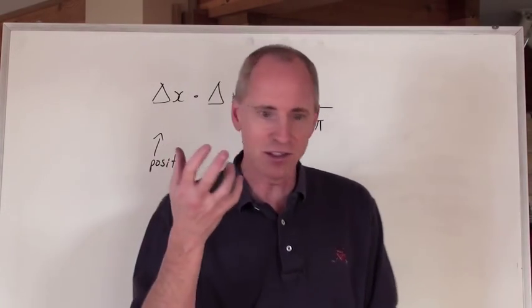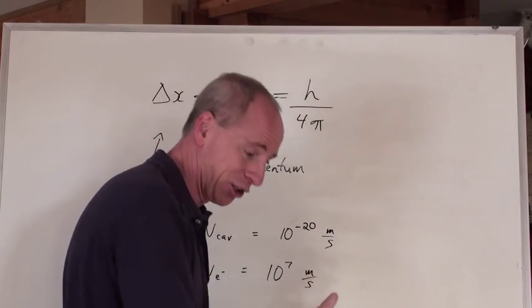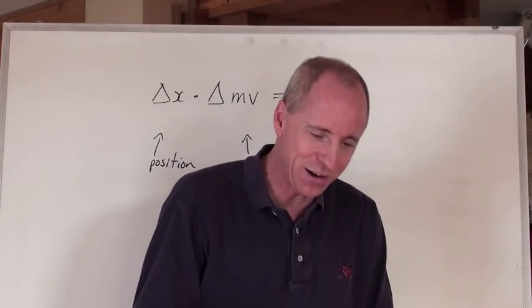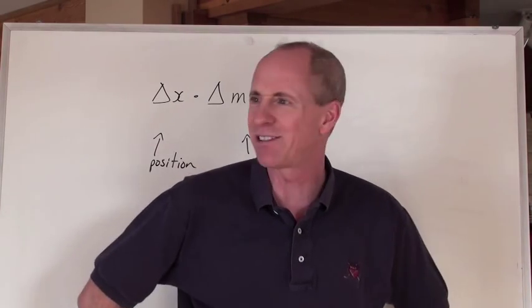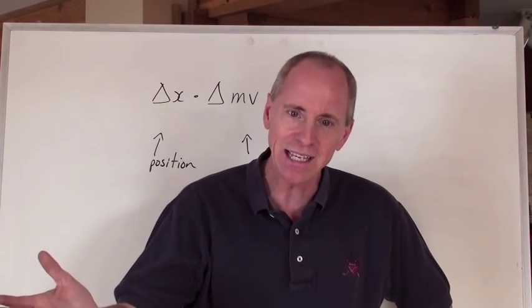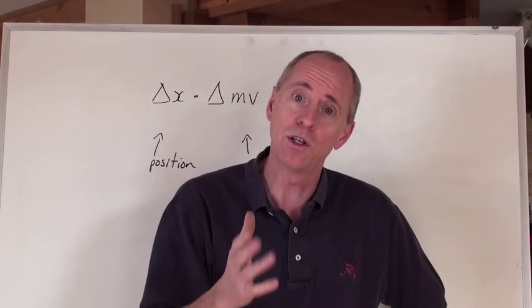So, essentially, the uncertainty in the speed of an electron, if we tried to find out how fast it was going, is pretty much plus or minus the speed of light. That's crazy. That's ridiculous. Yeah, it really is.